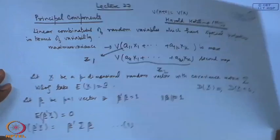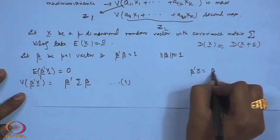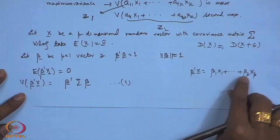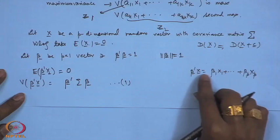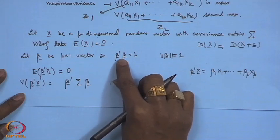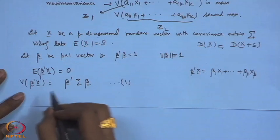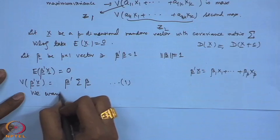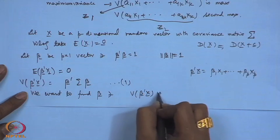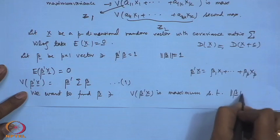Our problem is to find a linear combination β'x = β₁x₁ + β₂x₂ + ... + βₚxₚ and find values of β₁, β₂, ..., βₚ such that the variance of β'x is maximum. We impose the normalization condition: norm of β equals 1, to make it free from the units of measurement. We want to find β such that variance of β'x is maximum subject to the condition ‖β‖ = 1.